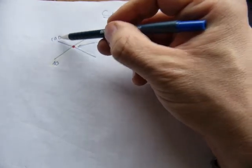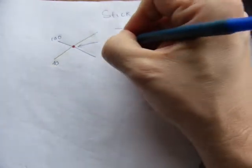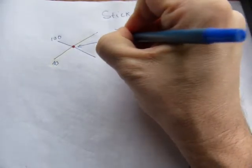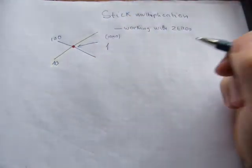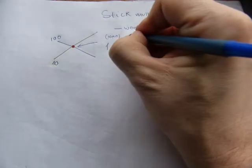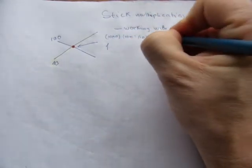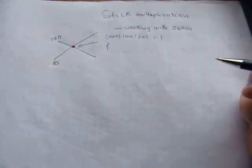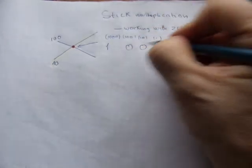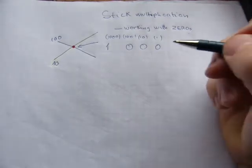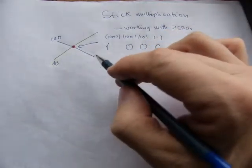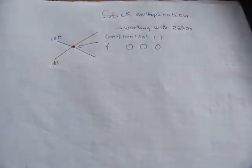This is where the place value comes in because this is a ten stick and this is a hundred stick. Ten times a hundred is a thousand, so this one is in the thousands column. And therefore in the hundreds, tens, and ones columns there will be nothing there, so you're gonna have to fill it in with zeros on your own.